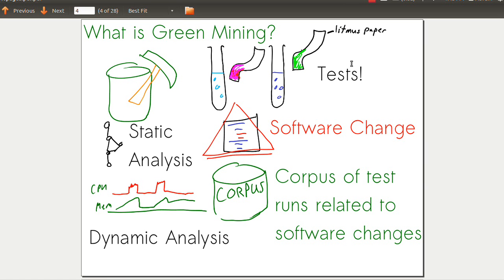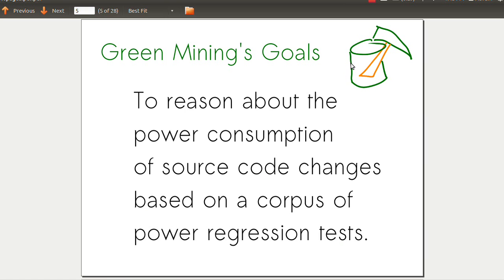This is green mining - where we take tests of the software and combine them with static and dynamic analysis to look at the effect of software changes on power consumption. We want to produce a corpus of these tests to allow us to reason about power consumption of source code changes based on power regression tests already run on either the same or different software.